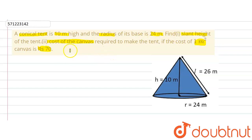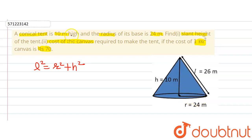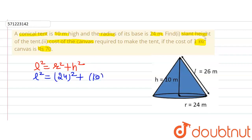First, we will find out the slant height of the tent. To find the slant height, we know that slant height squared is equal to radius squared plus height squared. We are given the radius and the height. Putting in the values, we get: slant height squared equals 24 squared plus 10 squared.